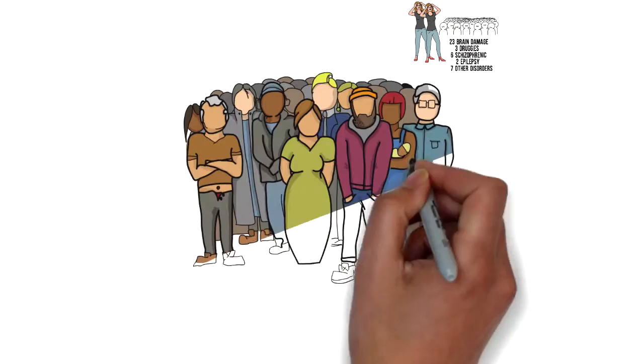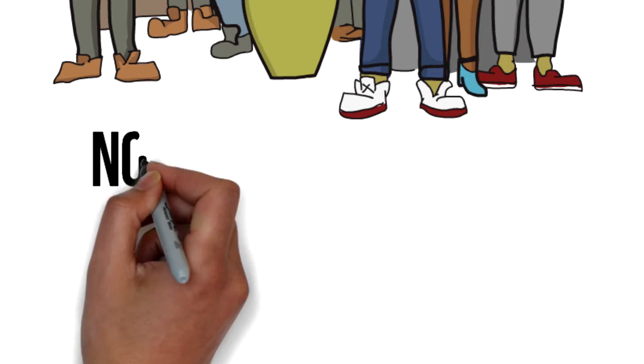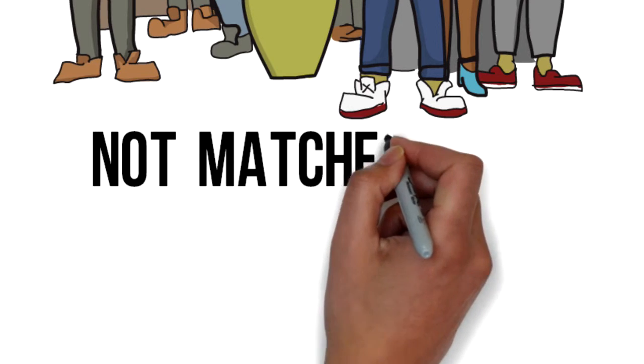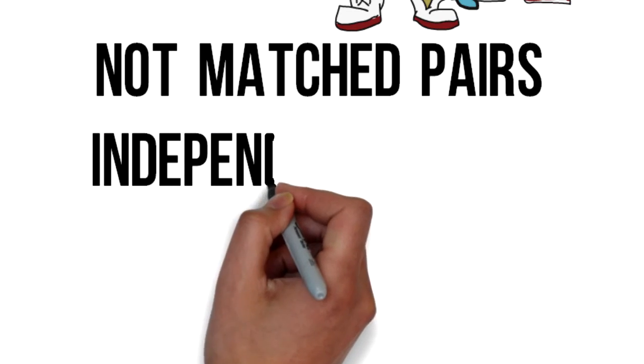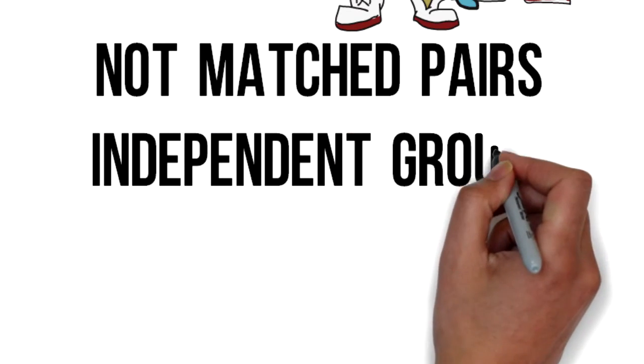Having said this, Raine didn't pair each participant's results up with their opposite number in the other group, so really this isn't a matched pairs design but more of an independent groups design.